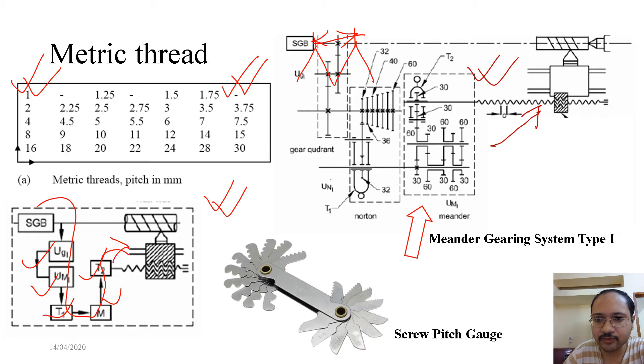Now this is a screw pitch gauge, which is typically used to gauge or check the pitch of the thread which is to be cut.